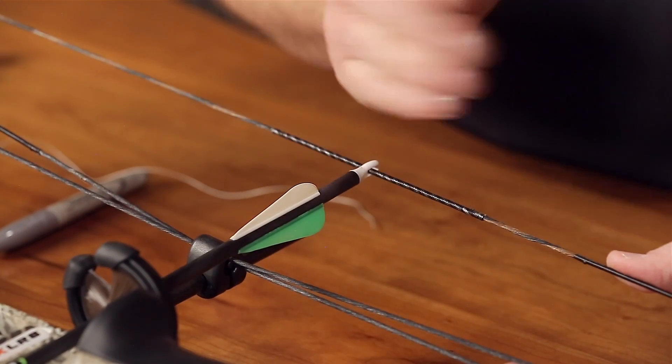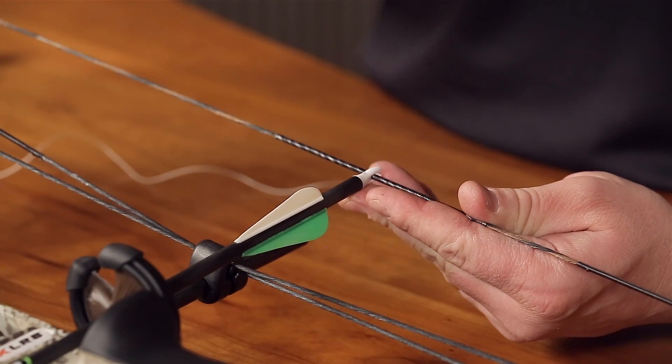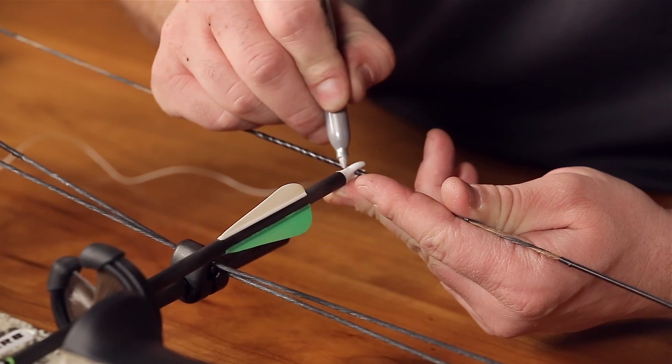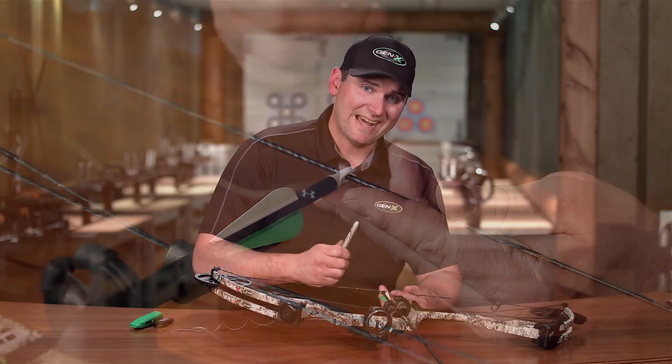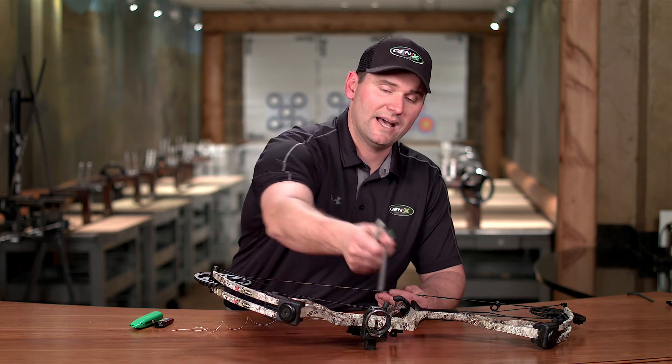Get your arrow square to your string, 90 degrees from your string. Once you find your location, take a marker and mark it. You want your knot to be 1/16th of an inch above your current nock location.